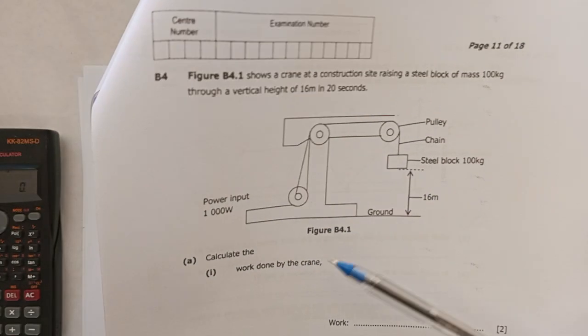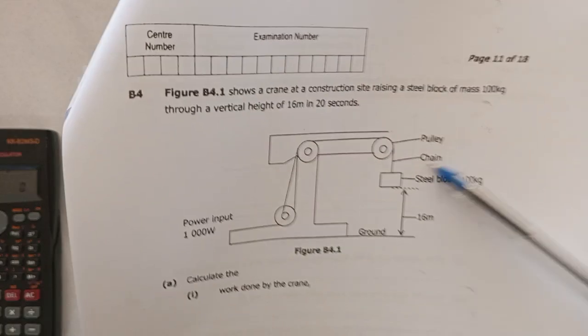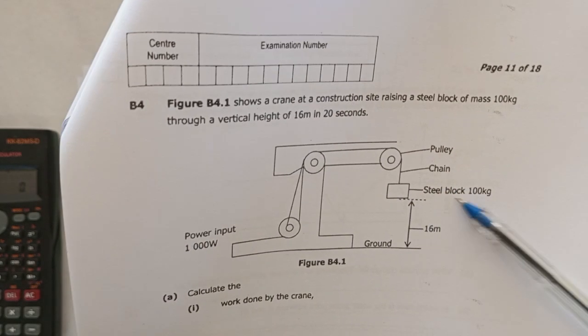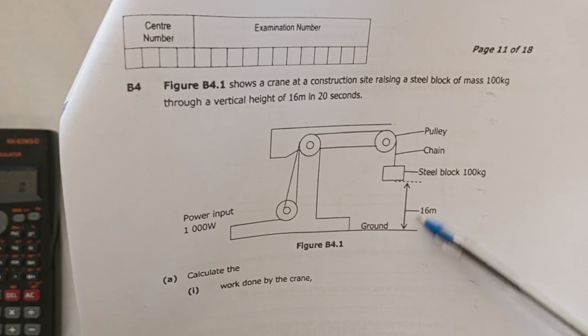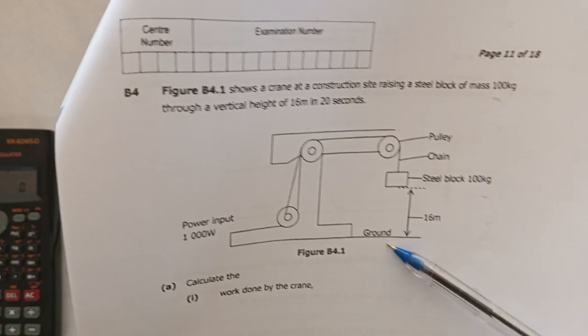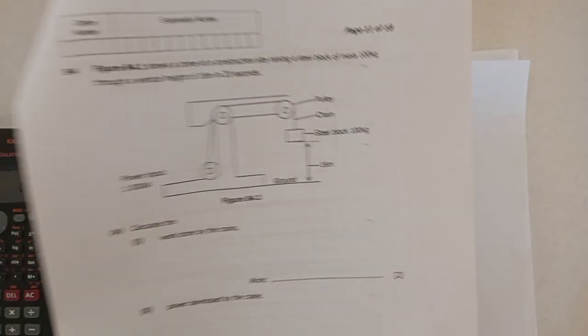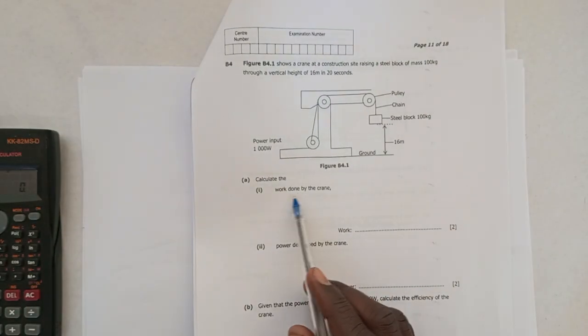So let's move forward. We have the pulley here, the chain, the steel block of 100 kg, the height of 16 meters, the ground, and the power input. The question now says calculate the work done by the crane.